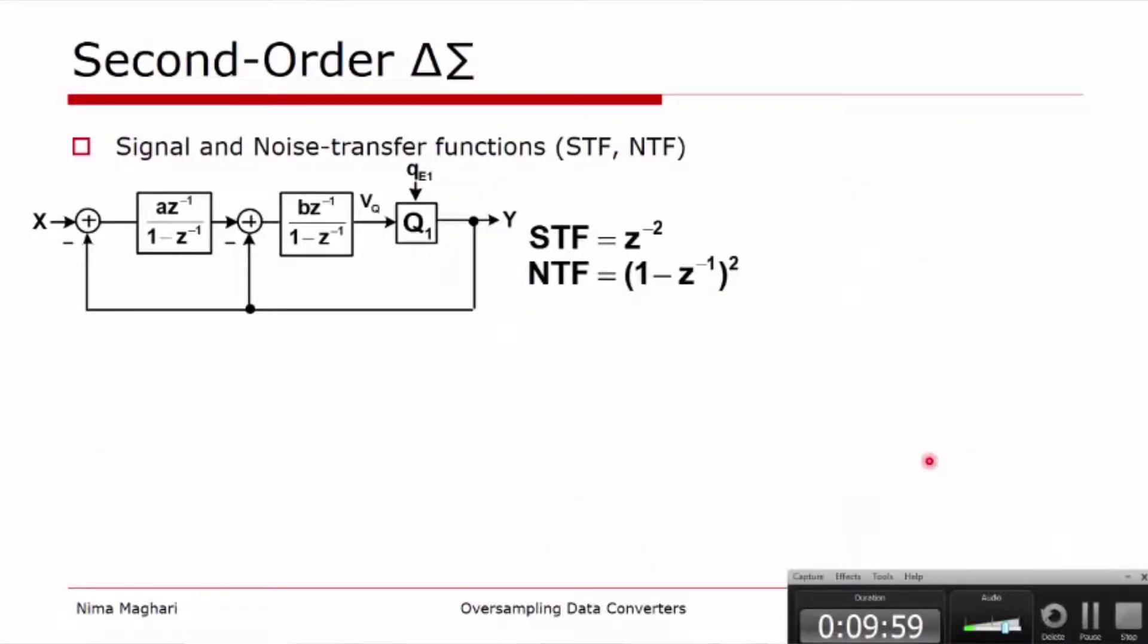That was the first-order delta-sigma modulator. We can increase the order to the third, fourth, fifth by just adding more integrators and DACs in the structure. So this is not the only architecture that you can use. We can use combination of feed forward and feedback, which is beyond the scope of this talk, but you can find it in relevant textbooks that I show at the end of this lecture.